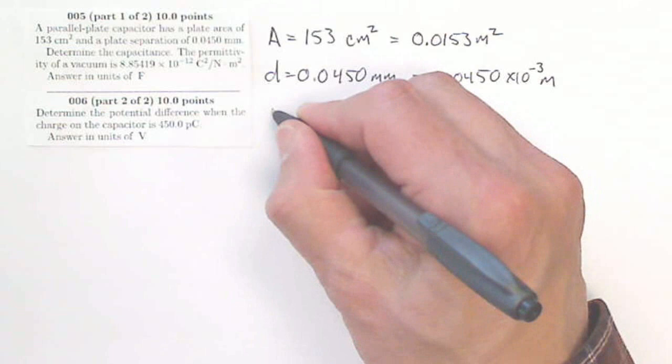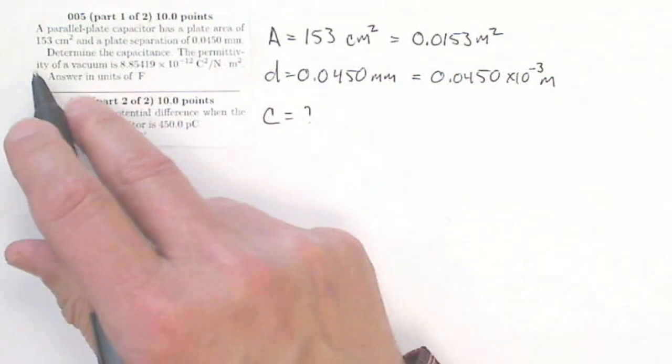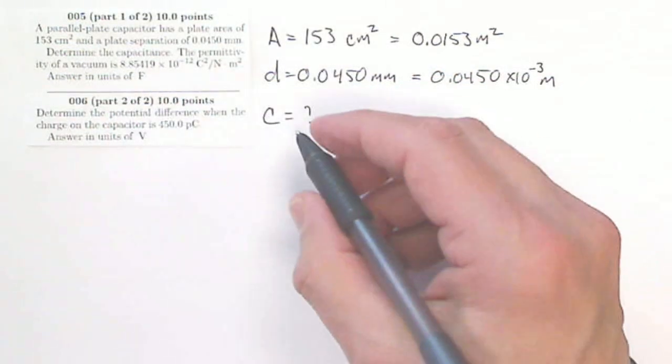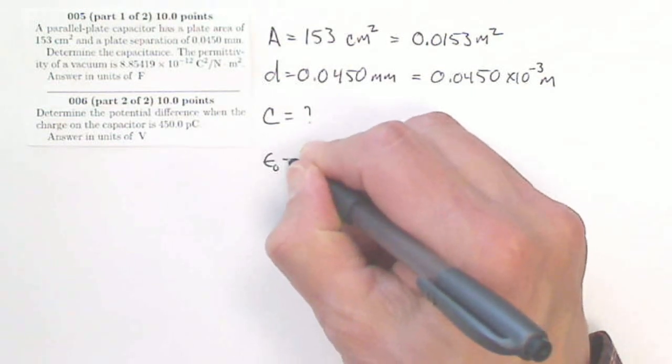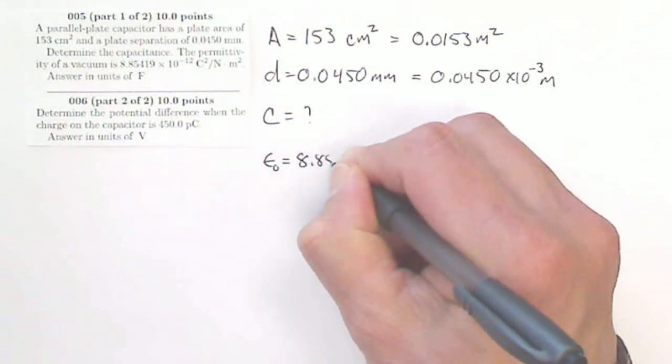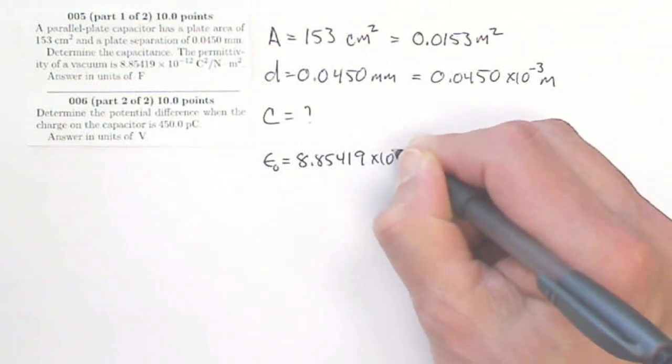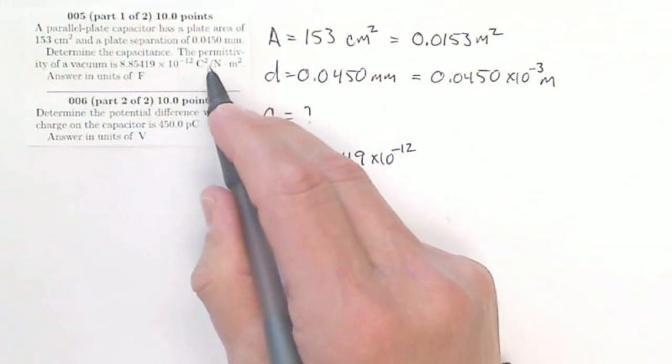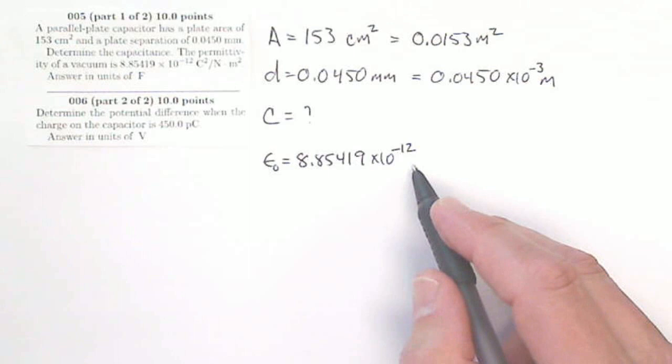Determine the capacitance, so C equals question mark. The permittivity of a vacuum is 8.85419, that's epsilon naught equals 8.85419 times 10 to the minus 12, coulombs squared, newtons, meters squared. So these are standard units.